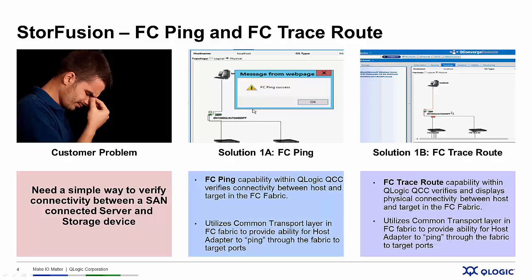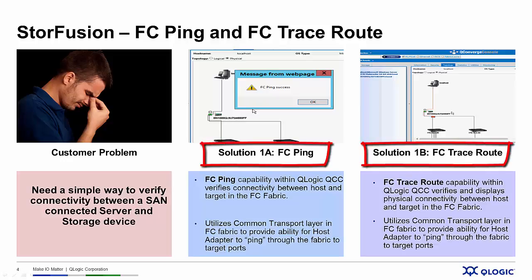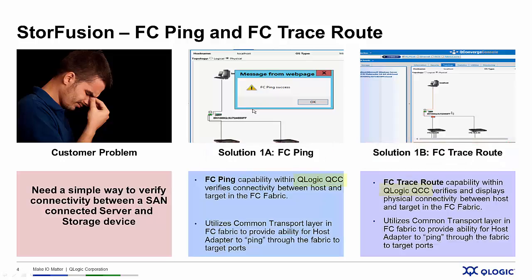What if there were a simple and fast way to verify the connectivity between a physical host and a storage device? That's what FC-Ping and FC-TraceRoute do. FC-Ping uses the SCSI Inquiry command across the SAN fabric to verify connectivity between a user-specified port and a storage target port. And FC-TraceRoute provides a visual display of the path of that connection. All this is done using Q-Logic's QConverge Console Management Utility.